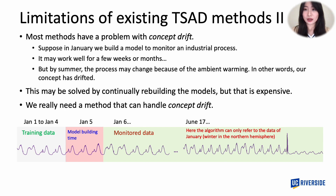In addition to lag, most methods also have a problem with concept drift. Suppose we build a model to monitor an industrial process in January. For the first few months, the model may work well. However, after June, as temperature gets warmer, the period of the data becomes shorter. This means that the model we built in January may no longer work well after June. You may think we can solve this problem by rebuilding a model, but recall that rebuilding a model is not cheap.